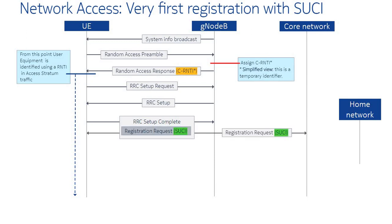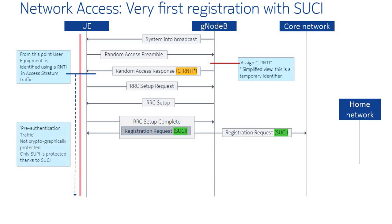The user equipment has no 5G globally unique temporary identifier, so it sends its SUCI in a registration request message, which is not cryptographically protected. It is important to note that during the first part of these exchanges, security protocols have not been established yet. The user equipment and the core network are exchanging pre-authentication traffic, which is not cryptographically protected.